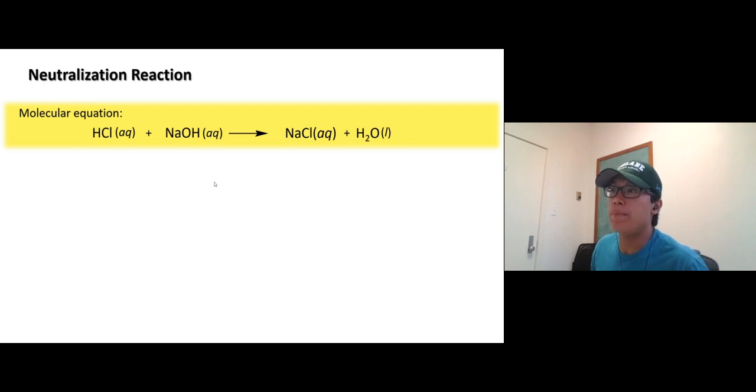All right, so this is an example of a neutralization reaction. Adding an acid, hydrochloric acid, and then a base, sodium hydroxide. Let's see what happened. Well, it's just a simple double displacement reaction. Sodium pairs up with chloride, and hydrogen or proton will pair up with hydroxide ion to make water.